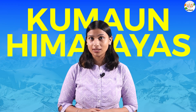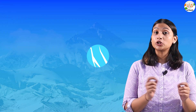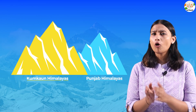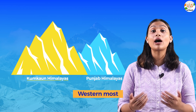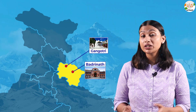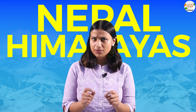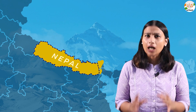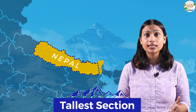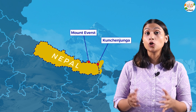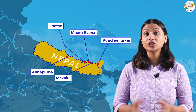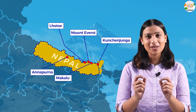Next hai humara Kumaon Himalayas. Is range ki general elevation Punjab Himalayas se ooochi hoti hai, aur westmost part me isko Garhwal Himalayas bhi bulate hai. Yaaan pe aap dhekho ge ki Badrinath, Gangotri jaisa Hindus ke kai pilgrimage centers bhi hai. Iske baad hai Nepal Himalayas — is range ka maximum part Nepal me laai karta hai. Kaha jata hai ki ye Mount Everest ke sabse tallest section me aate hai, jaisa ki Mount Everest, Kanchanjunga, Lhotse, Makalu, Annapurna jaisi ranges Nepal Himalayas me aate hai.